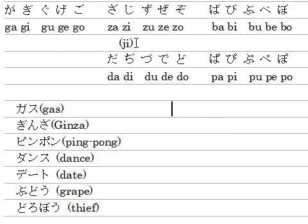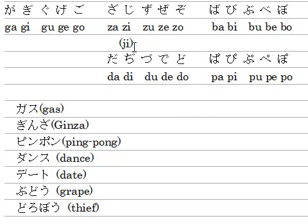It's J. So you can type either Z-I or J-I to convert to Japanese. But the pronunciation is closer when you type J-I. Anyway, you can use both.